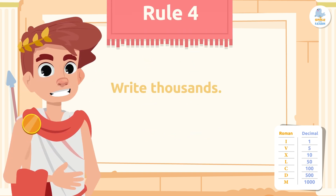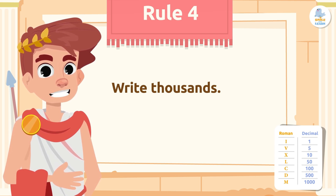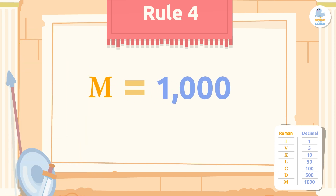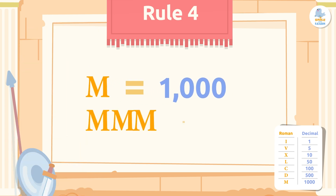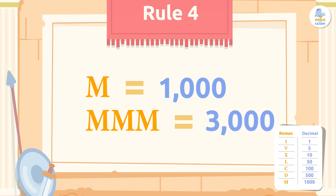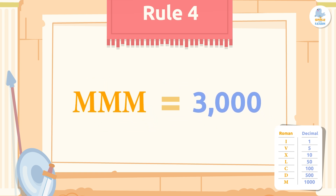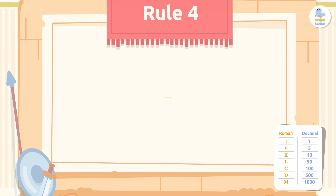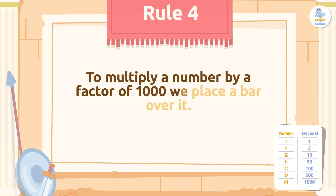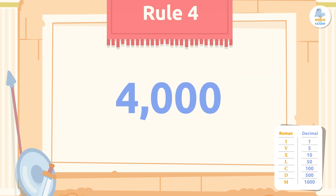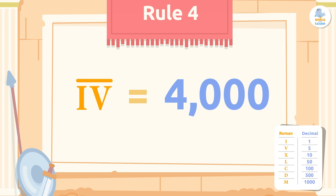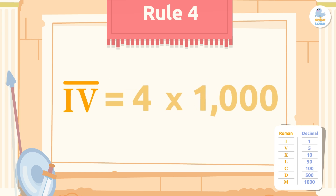Now for the last rule — writing large thousands. We can only repeat a letter a maximum of three times, so by repeating M three times we get 3,000. But how do we write even larger numbers? To multiply a number by a factor of 1,000, we place a bar over it. For example, to write 4,000 we write the letters IV with a bar over them — this represents 4 times 1,000, which equals 4,000.